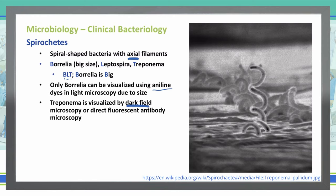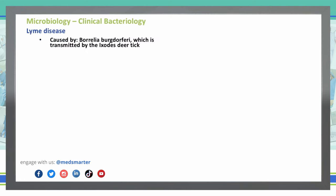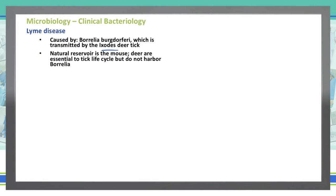Borrelia is a spirochete that causes Lyme disease. Borrelia is transmitted to humans through the Ixodes deer tick. The natural reservoir is the mouse — it originally came from a mouse. The deer became the intermediate host; it doesn't harbor it, it's just an intermediate host. The Ixodes tick bites the deer, becomes infected with the spirochete Borrelia, and then when it bites a human, it transmits the disease.